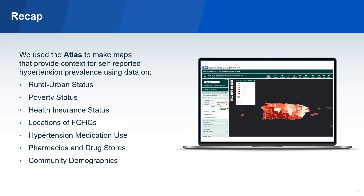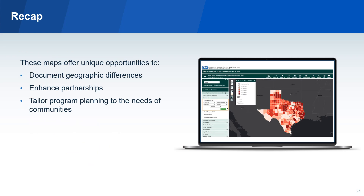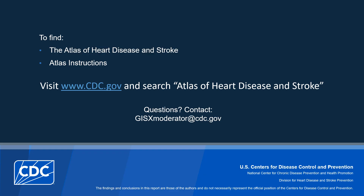To recap, using the Atlas we made maps that display the prevalence of hypertension by county and census tract, rural-urban status, poverty status, health insurance status, FQHC locations, hypertension medication use, pharmacies and drug stores, and community demographics. Maps like these can be used to document geographic differences in your communities, enhance partnerships both within your organization and with other organizations, and tailor program planning to the needs of your community. Thank you for watching. You can find the Atlas of Heart Disease and Stroke and instructions on how to use it by visiting www.cdc.gov and searching Atlas of Heart Disease and Stroke.